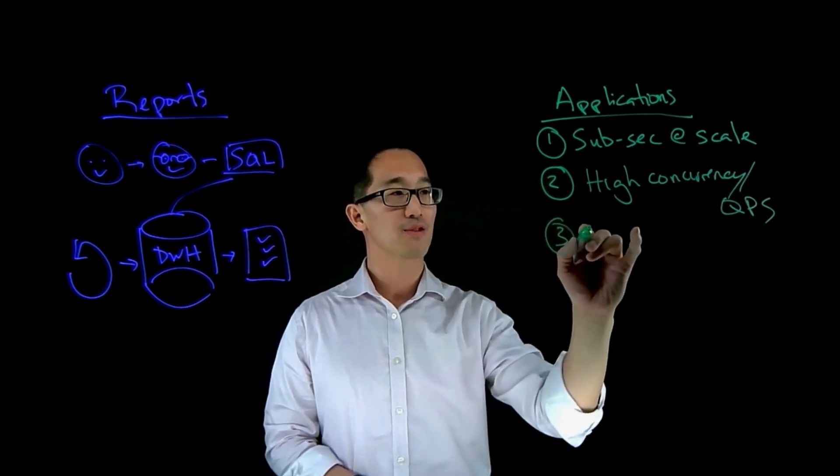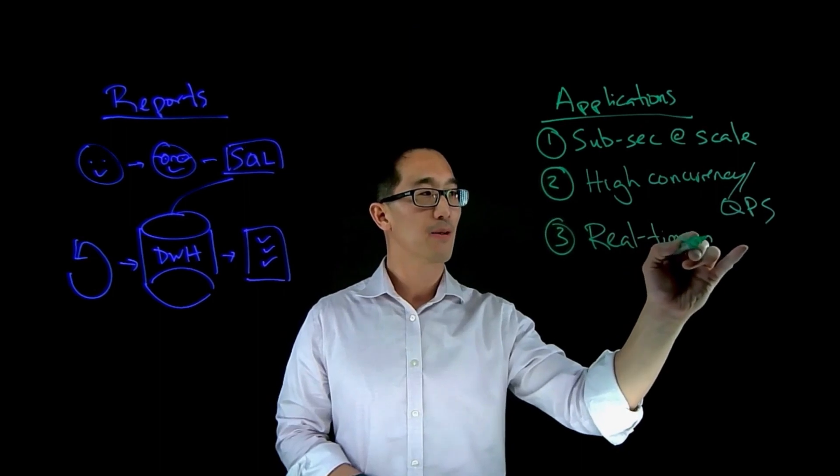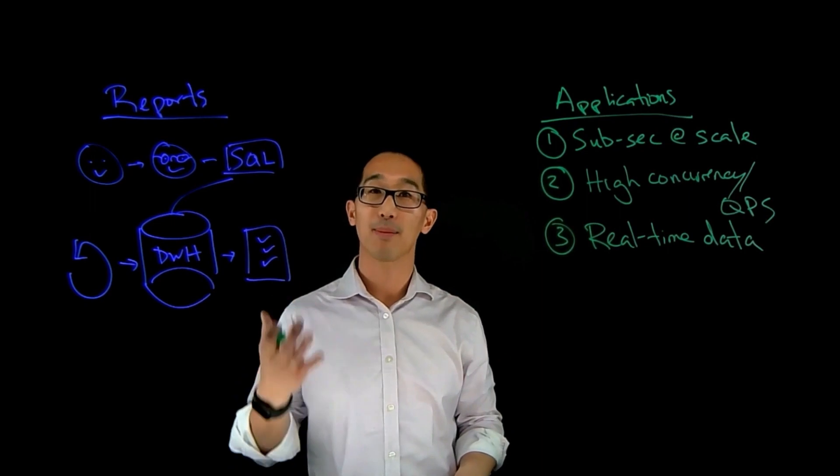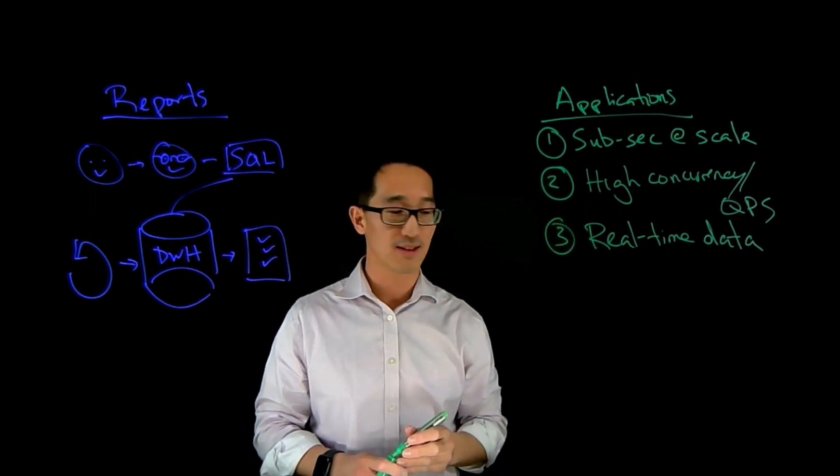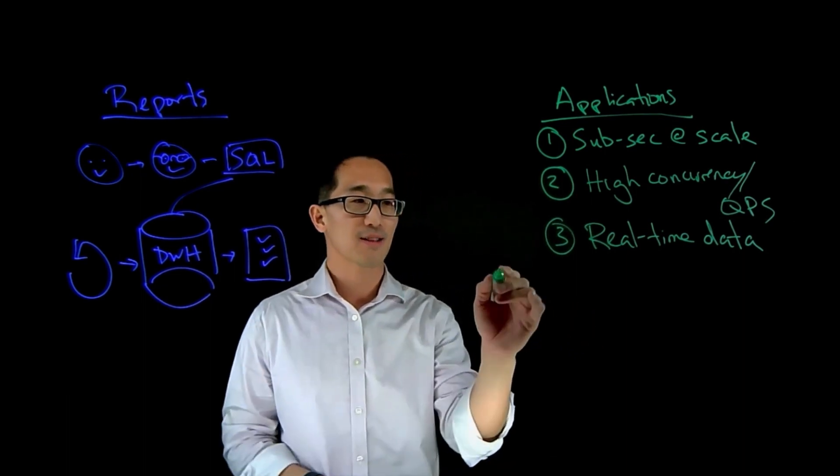And the third reason they use Druid is really because of real-time data. And this is really the ability to support stream-based ingestion from things like Apache Kafka or Amazon Kinesis. And to put it all in context for you, the best way to look at it is kind of look at an example.